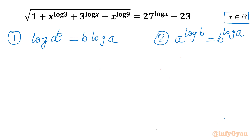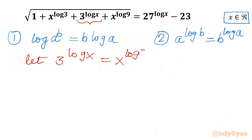Let's apply these to our equation. I will use substitution. Using property 2, we know that 3^(log x) is the same as x^(log 3). Let us call this value k.